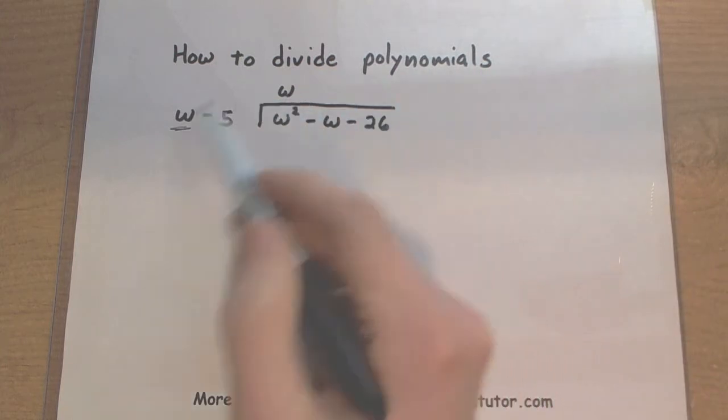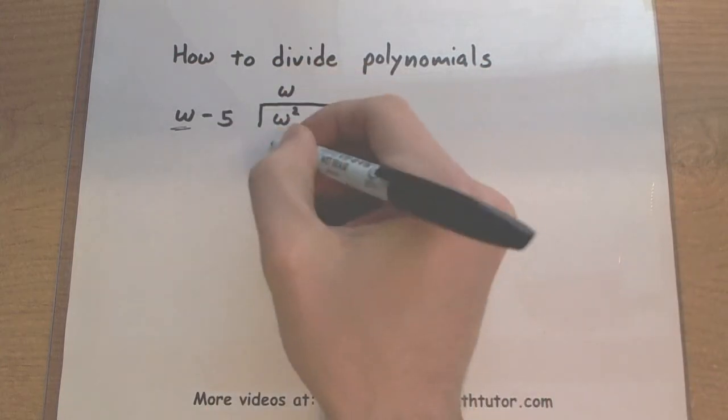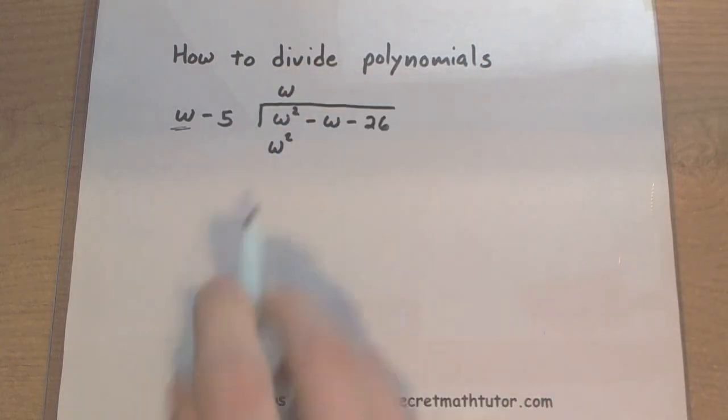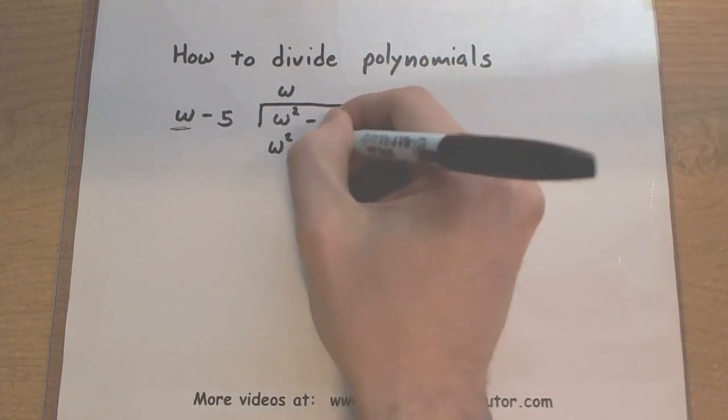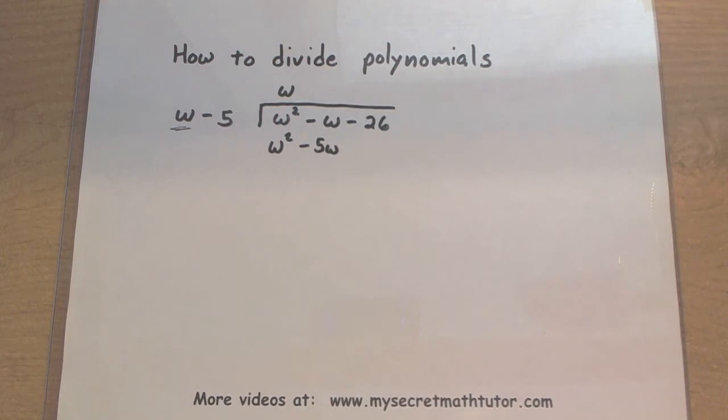Now, part two, let's go through the multiplication process. w times w, w squared. And we'll multiply the w by the minus 5. So this will be minus 5w. All right, now comes a very important part. We want to subtract this away.